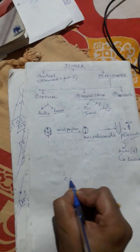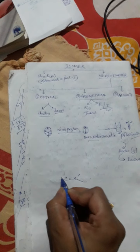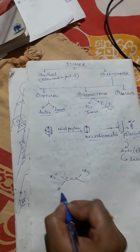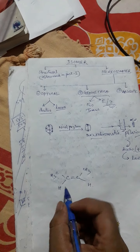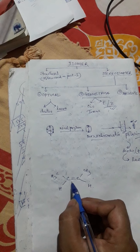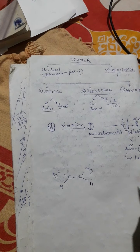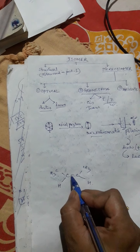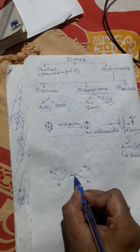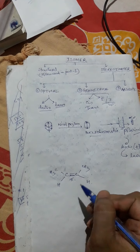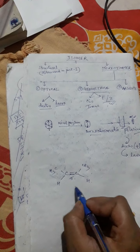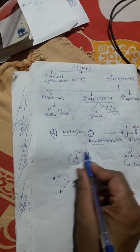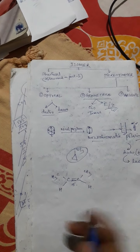For cis/trans, if I draw a structure it will be more clear. Suppose we have CH3 and CH3 on one side and H and H on the other. Geometrical isomerism occurs due to restriction of rotation of atoms, which may be due to the presence of a double bond — that is, a pi-bonded compound — or due to the presence of a cyclic compound.